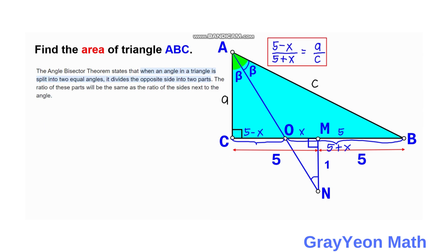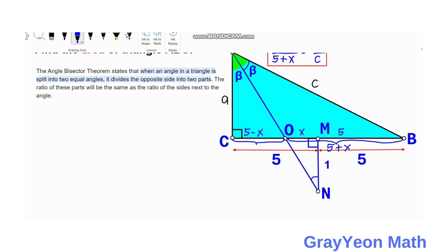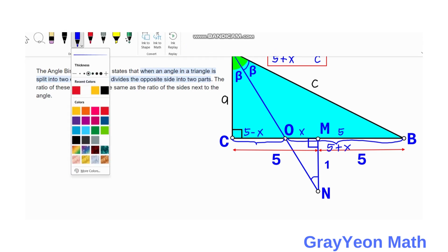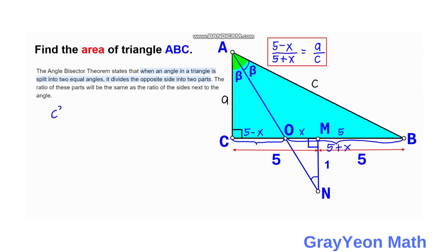We can make another equation using the Pythagorean theorem. The hypotenuse is C, so C squared equals A squared plus the other leg squared. The other leg is given as 10 units, so C squared equals A squared plus 100.